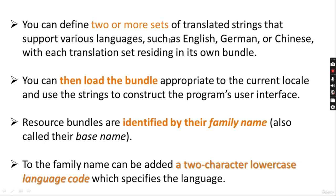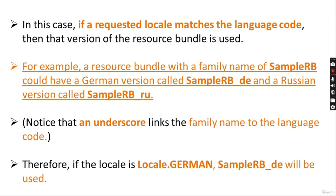ResourceBundles are identified by their family name called the base name. The family name can be appended with a two-character lowercase language code, like EN for English. If a requested locale matches the language code, then that version of the resource bundle is used. For example, a resource bundle with a family name of SampleRB would have a German version called SampleRB_DE and a Russian version SampleRB_RU.